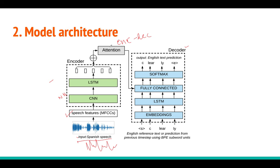The encoder output, after attention, goes to the decoder, where word pieces are predicted. The output of every step goes back as input to the next step — for example, 'c' goes back to the second time step, predicts the next token, and so on. This is the sequence-to-sequence model — you give audio input in one language and predict the translated text in another language at the decoder.